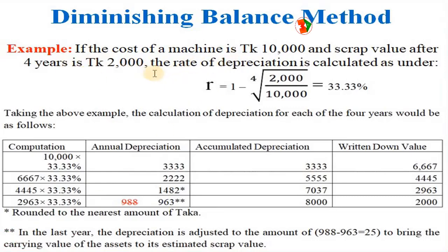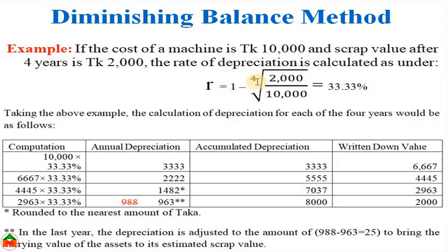For easy understanding, consider this example: the cost of a machine is 10,000 and the scrap value of the asset is 2,000 after four years. Here 10,000 is the acquisition cost, 2,000 is the scrap value or salvage value or residual value, and four years is the estimated useful life. Applying the formula, r indicates the rate of depreciation, where 4 is the estimated useful life, s is the scrap value, and c is the acquisition cost.